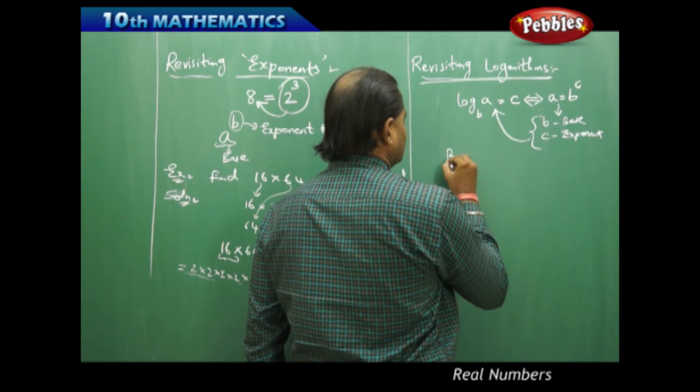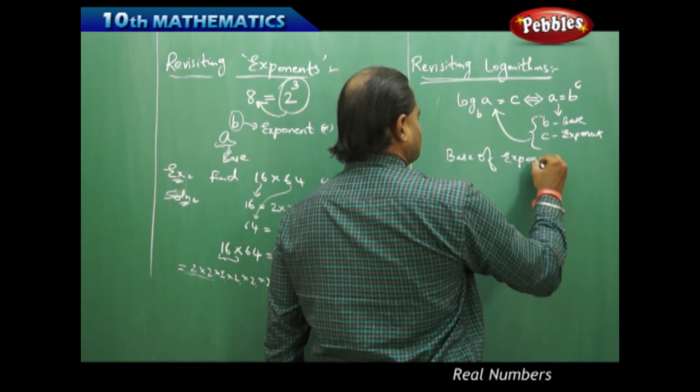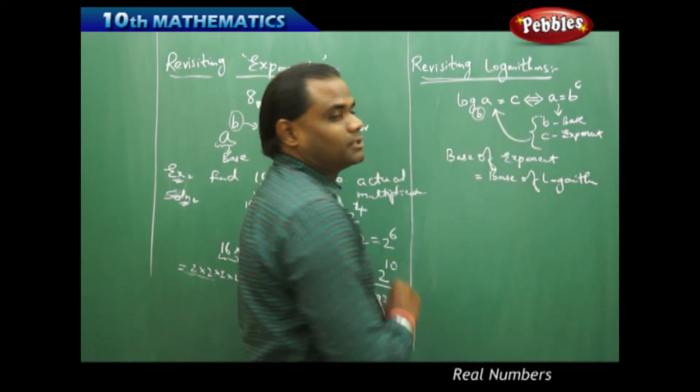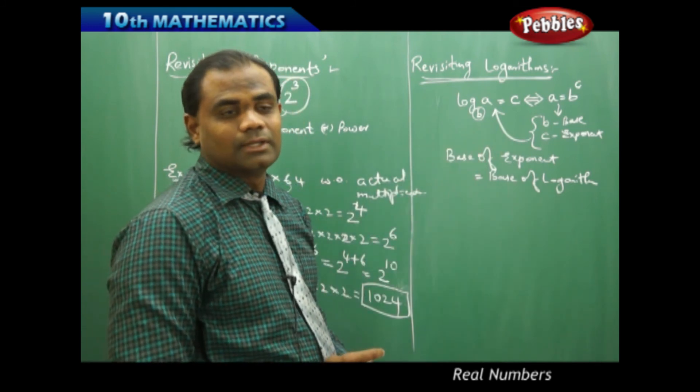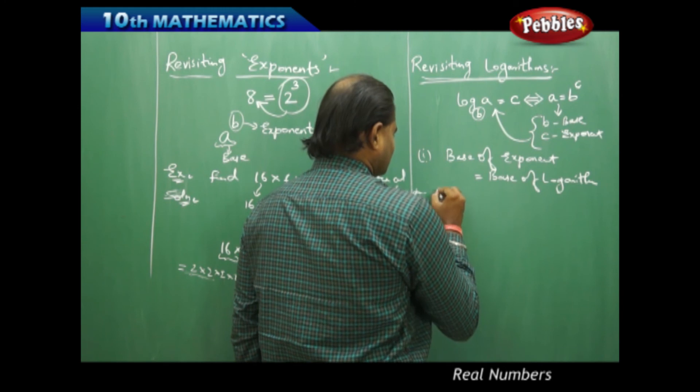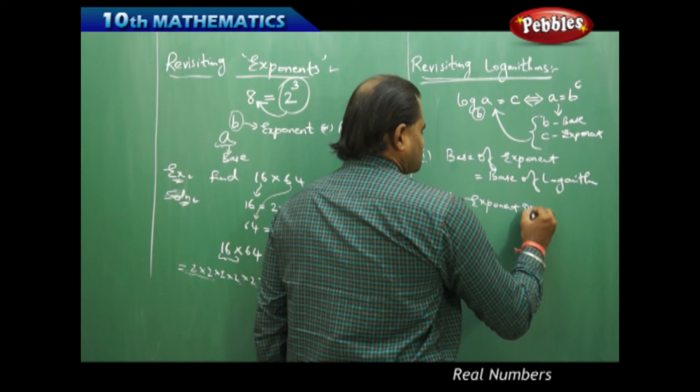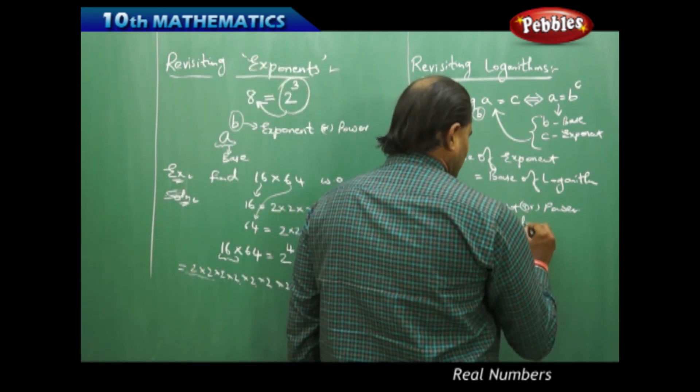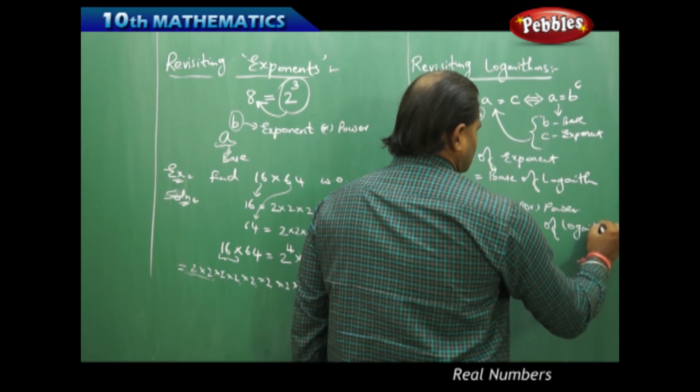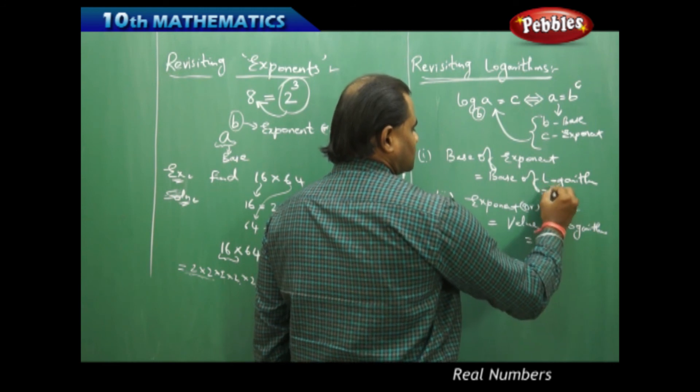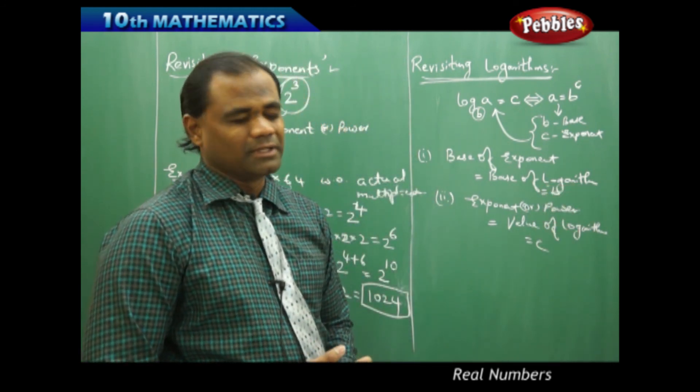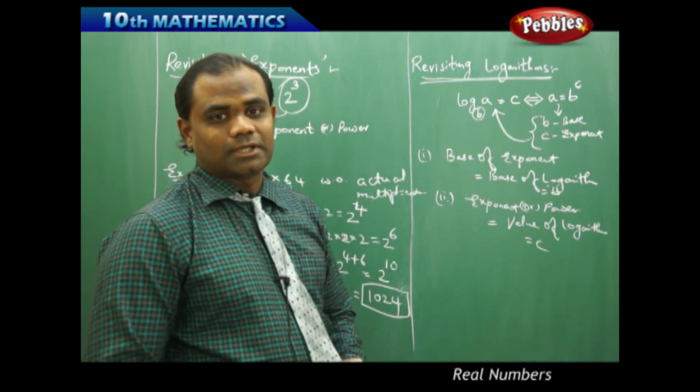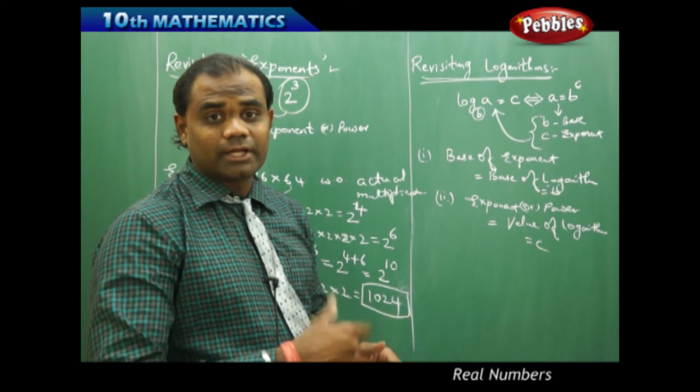When I connect these two things, I understand that base of exponent is nothing but base of logarithm. So base of exponent will also be the base of the logarithm. And secondly, exponent or power of this exponential equation will be nothing but the value of logarithm. Here this being c and this being b is how I understand the difference between the base and exponent, between the logarithms and exponential equations. So these are the concepts through which I can convert any logarithm value into the exponential form or any exponential form into the logarithmic form.